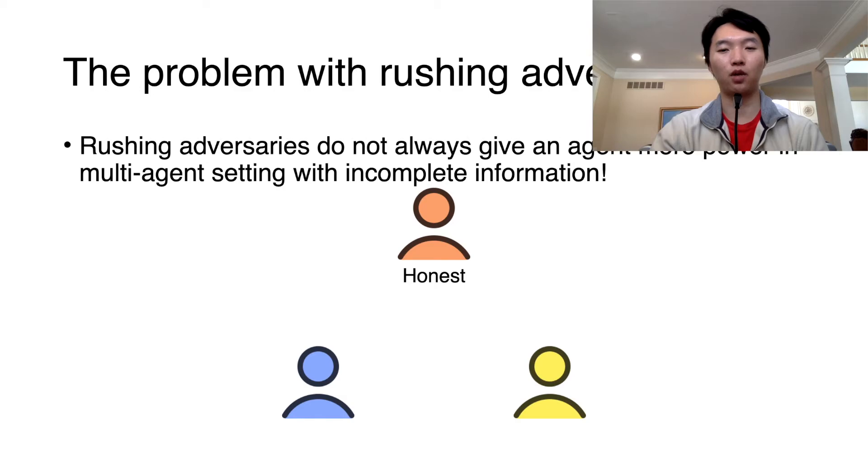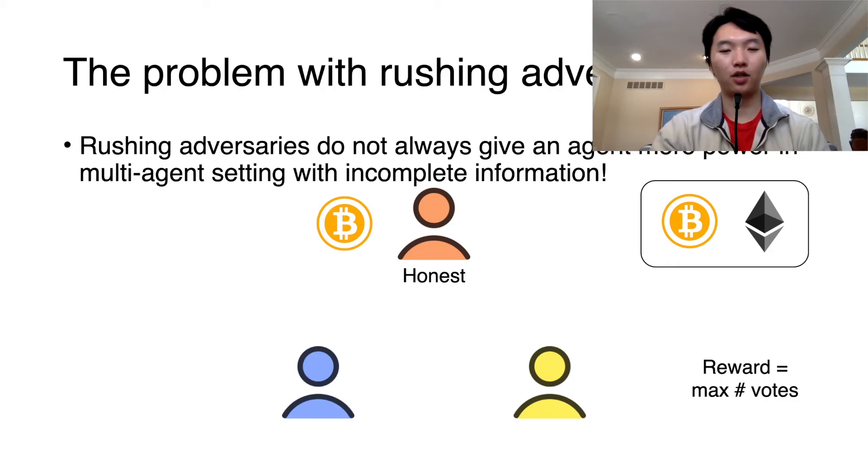Consider a toy example, where the yellow agent's reward is the maximum number of votes for either Bitcoin or Ethereum, and the blue agent's reward is the negative of the yellow agent's reward. The honest agent will vote randomly. Then in the rushing adversary assumption, the honest party first makes a choice, and then the blue and yellow agents see that choice and make their own votes. The blue agent will always choose to vote opposite to the honest agent, leading to the yellow agent's reward being capped out at 2. Now assume that the blue and yellow agents don't get any early information about the honest agent's choice. Then all they can do is vote randomly, which can lead to the yellow agent receiving a reward of 3. So in fact, in this game, the yellow agent benefits from strategic agents not getting early information.